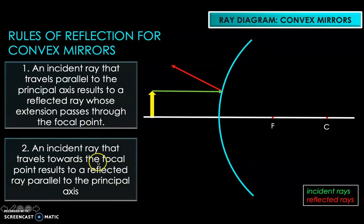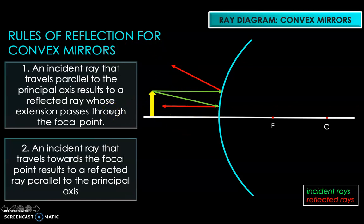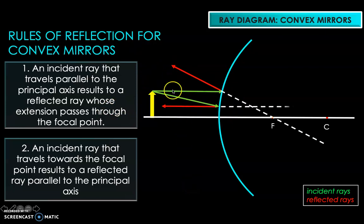The second rule: an incident ray that travels towards the focal point results in a reflected ray parallel to the principal axis. To find the image, we extend those two reflected rays backwards — extending them forward, they don't meet. Extending them backwards, their intersection gives us the location of the tip of the image.